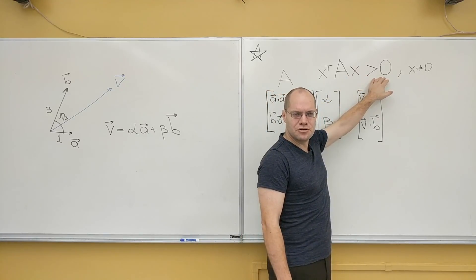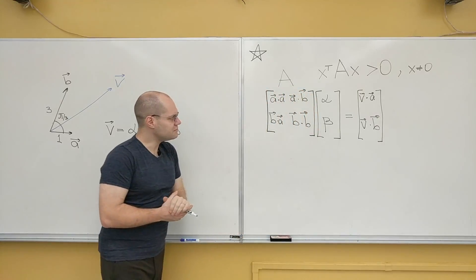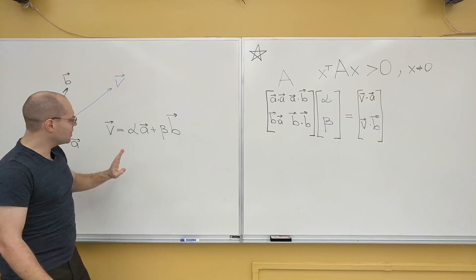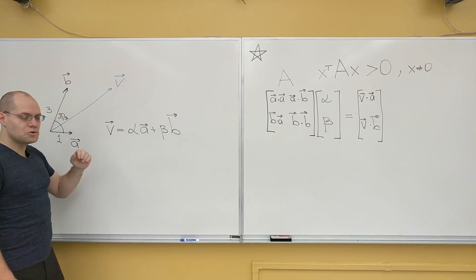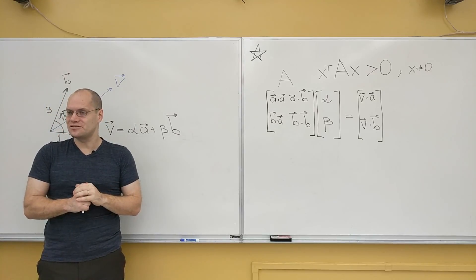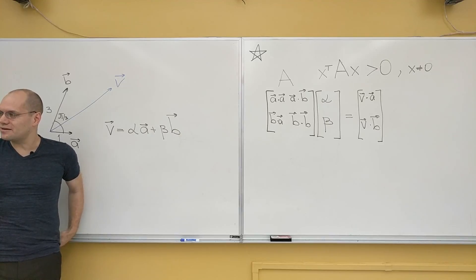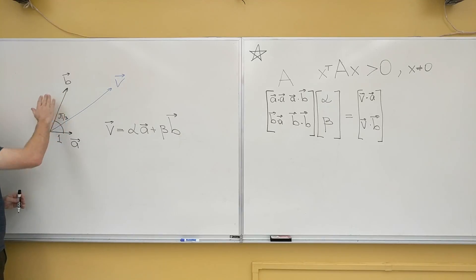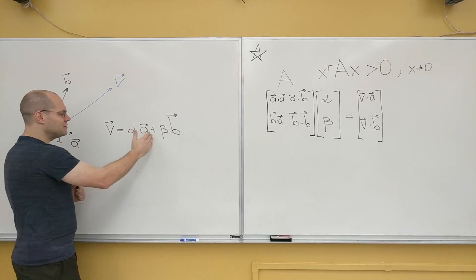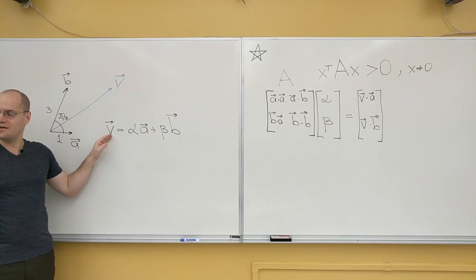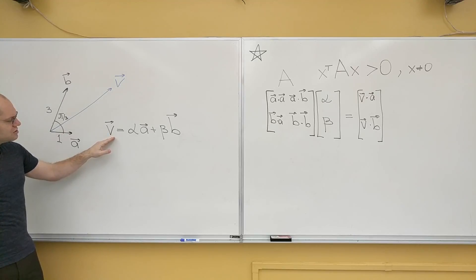So if for any non-zero x this combination, which is a one-by-one matrix or a number, is always greater than 0, then the matrix is called positive definite. So what I'm going to do here, which will be a preview of a very important but simple calculation, is calculate the length of V and try to express it in terms of α and β. In other words, if you think of a and B as the basis, α and β are the components of V with respect to this basis.